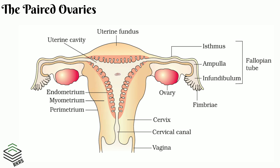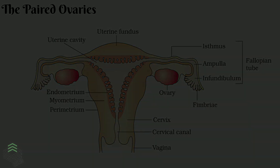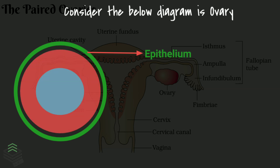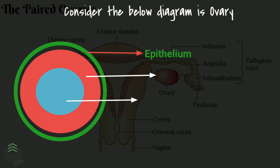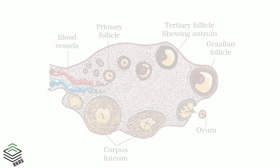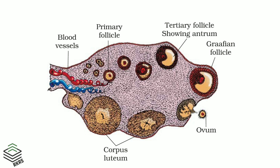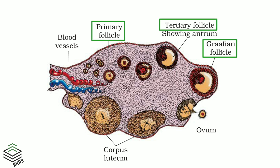The ovary has two regions: an outer cortical region and an inner medulla region. In the cortex, there are cell clusters called ovarian follicles. Each ovarian follicle carries a centrally placed ovum.